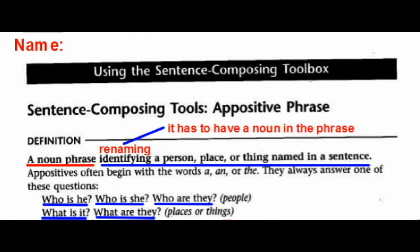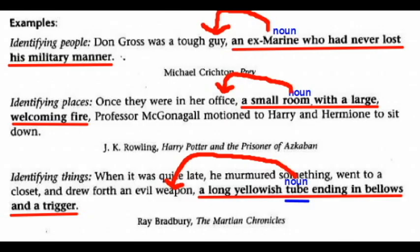Appositive phrases often begin with the words a, an, or the. They always answer one of these questions: who is he, who is she, who are they — if it's renaming a person — or what is it, or what are they — if it's renaming a place or a thing.